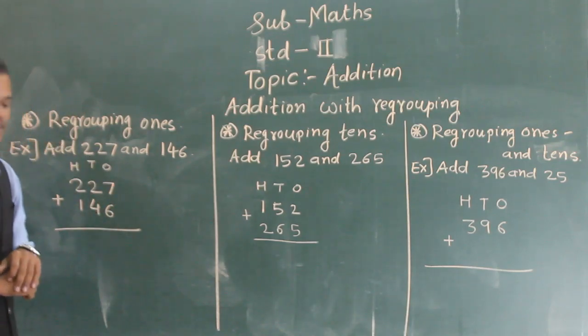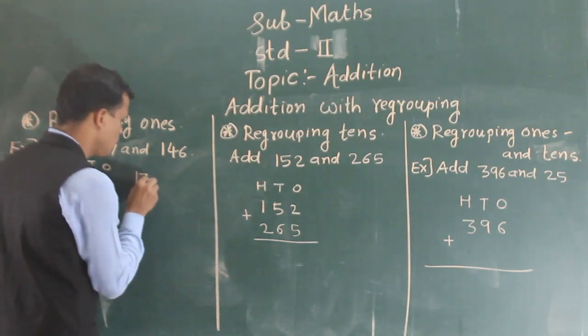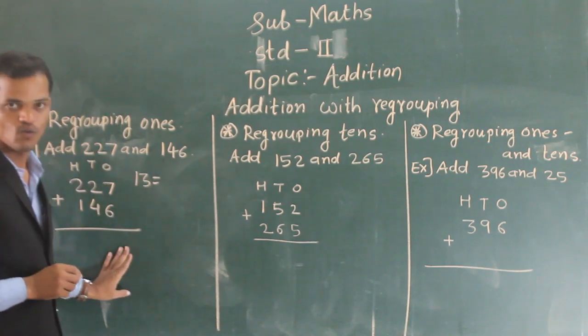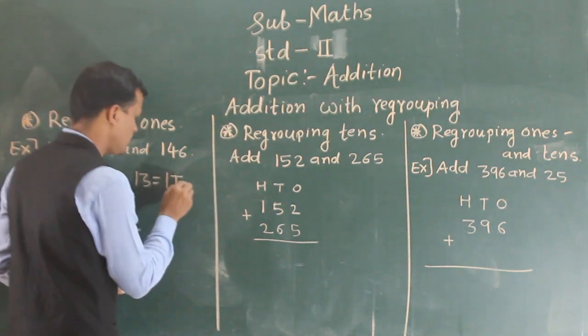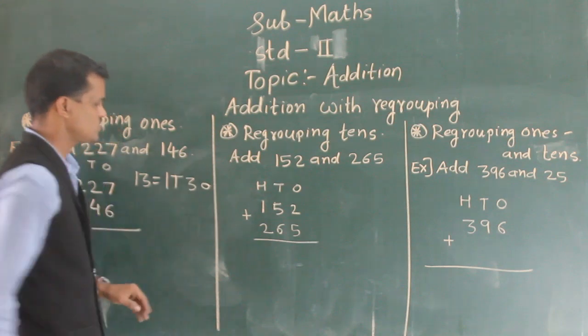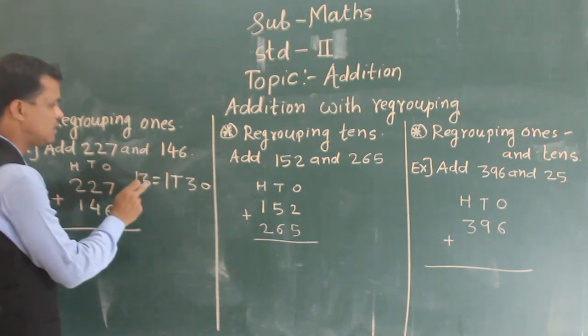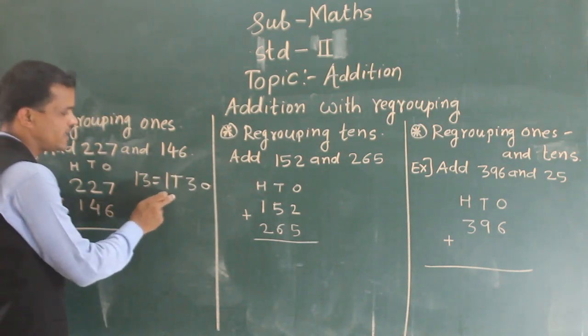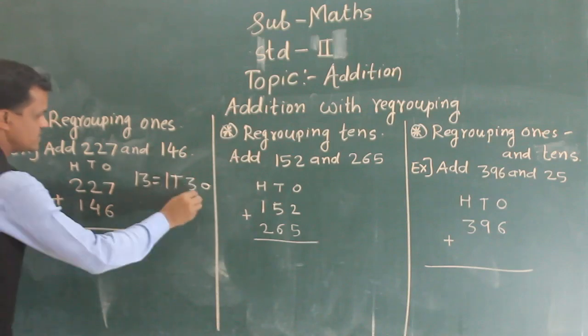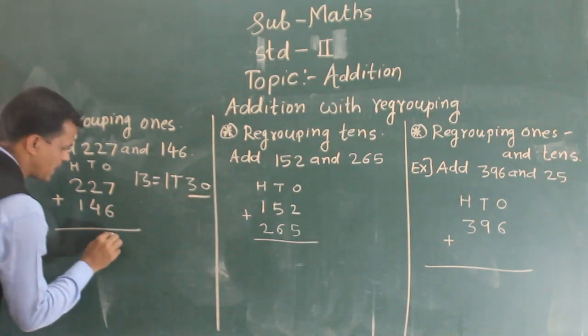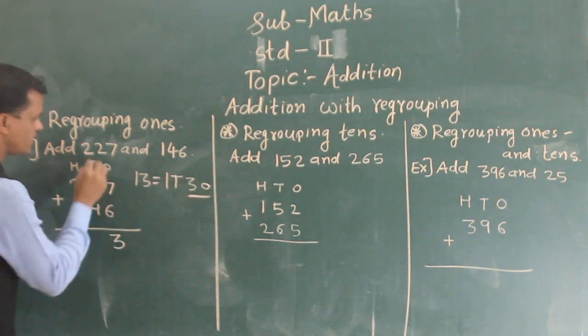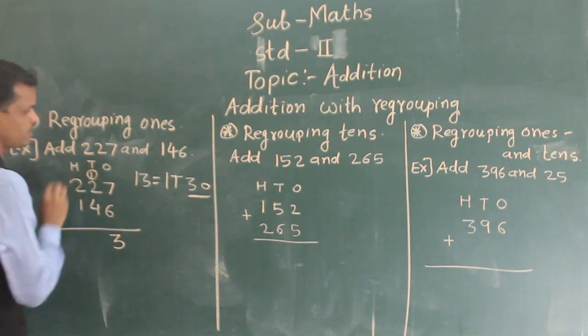So 13 ones. 13 ones means 1 ten and 3 ones. So that 3 ones, 3 ones I am writing here and 1 can add the tens place.